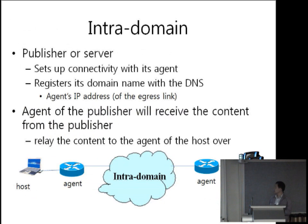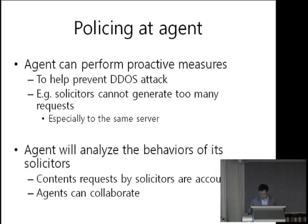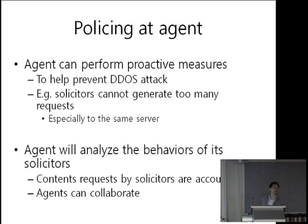Suppose this is a client and this is a publisher. The publisher is also attached to its own agent, and its domain name is registered with DNS. The agent's public IP address will also be registered in DNS. When a host requests content from the publisher, each agent will contact DNS and retrieve the public IP address of the corresponding agent. With this agent model, we can enforce policies — for instance, an agent can perform proactive security measures to prevent DDoS attacks, such as preventing an end host from generating too many requests to the same server.